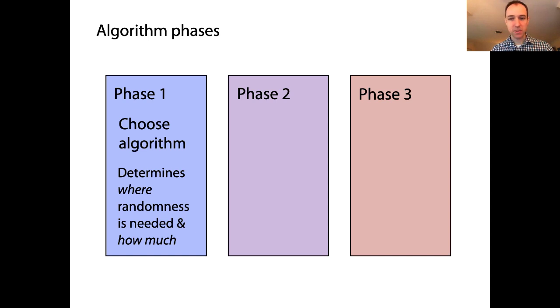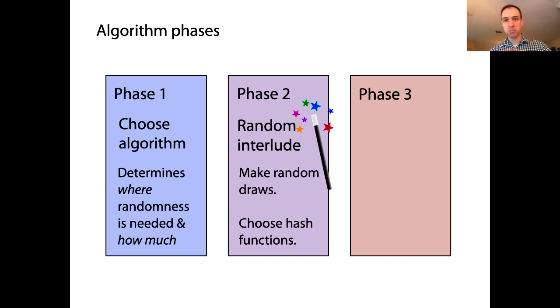Then, phase two, which happens after phase one, is what I'll call the random interlude. This is where all the random stuff happens. So if we know that we need, for example, ten hash functions, ten different hash functions, and all of those ten hash functions each need three random numbers, well, this is the phase when we would actually go generate all of those thirty total random numbers that we need. And therefore, once we're finished with phase two, we can now pin down the hash functions. The hash functions have been chosen.